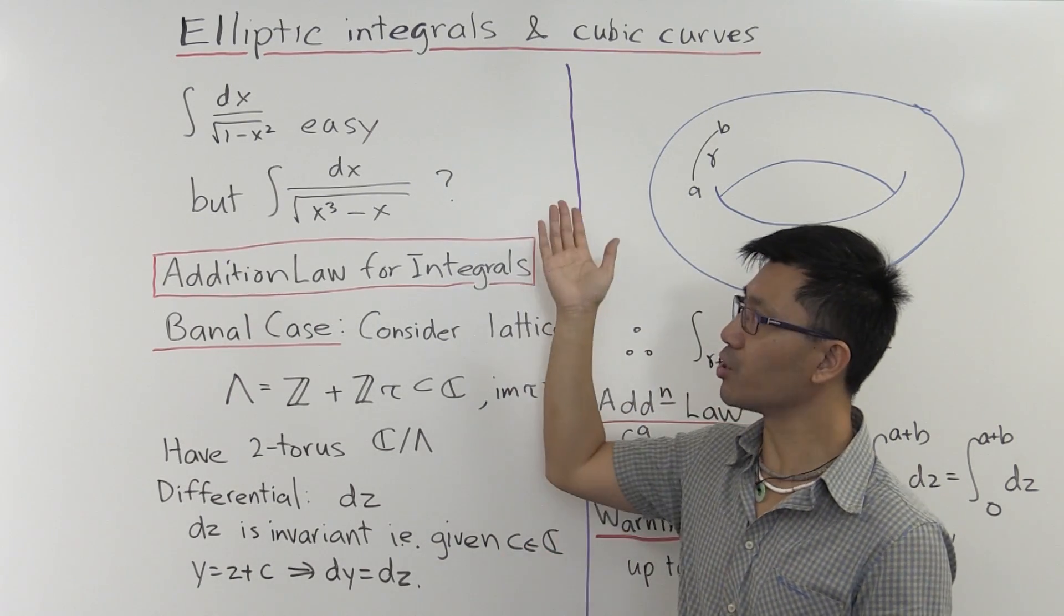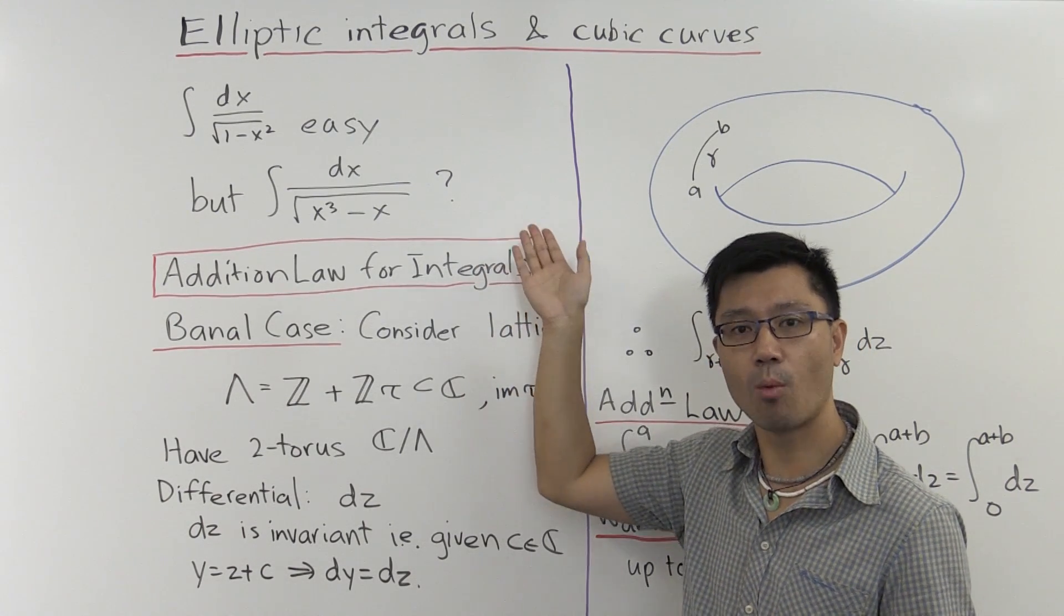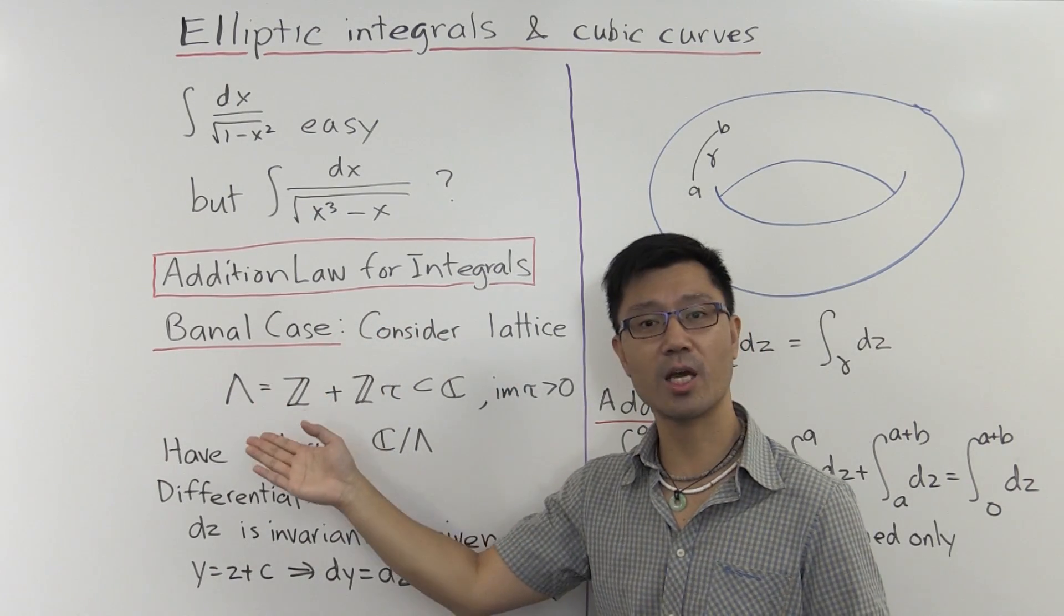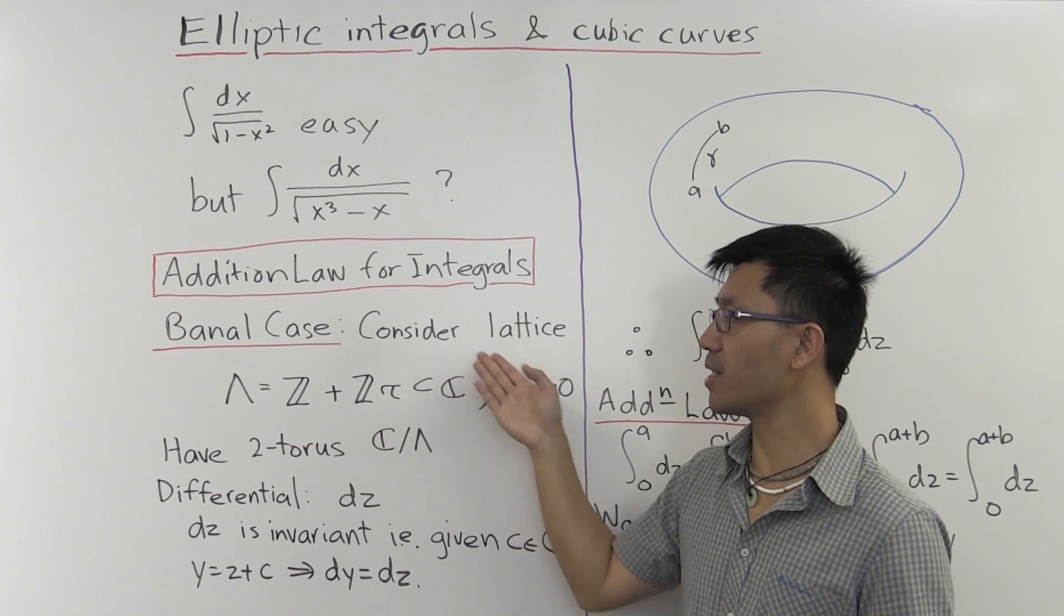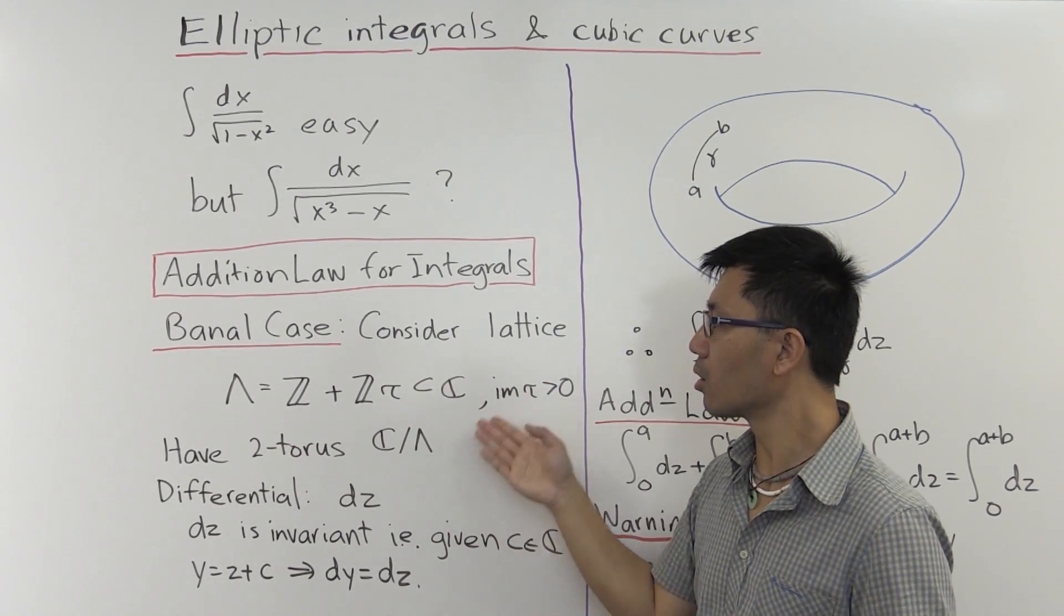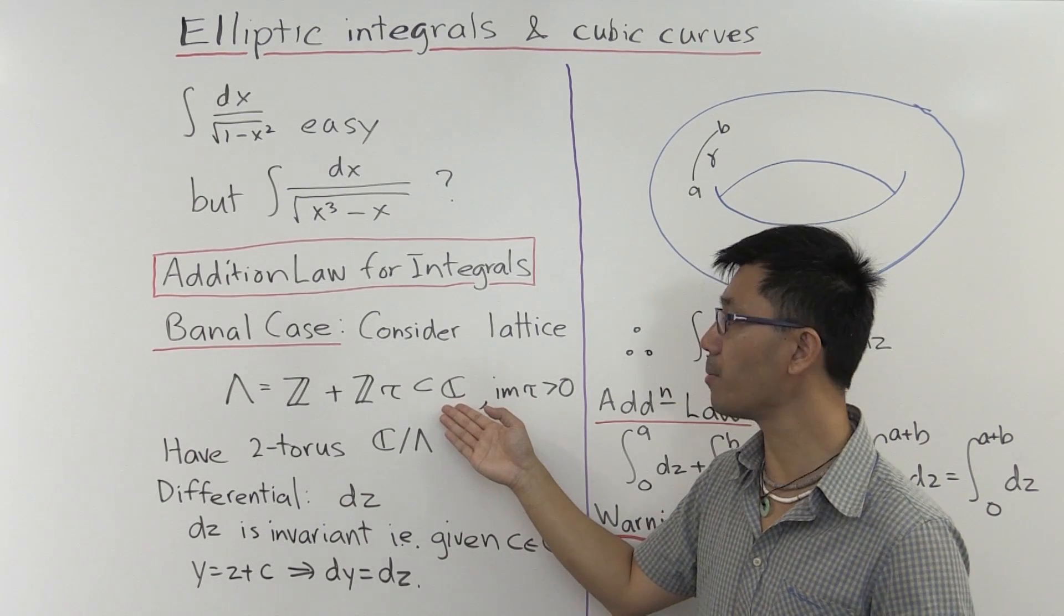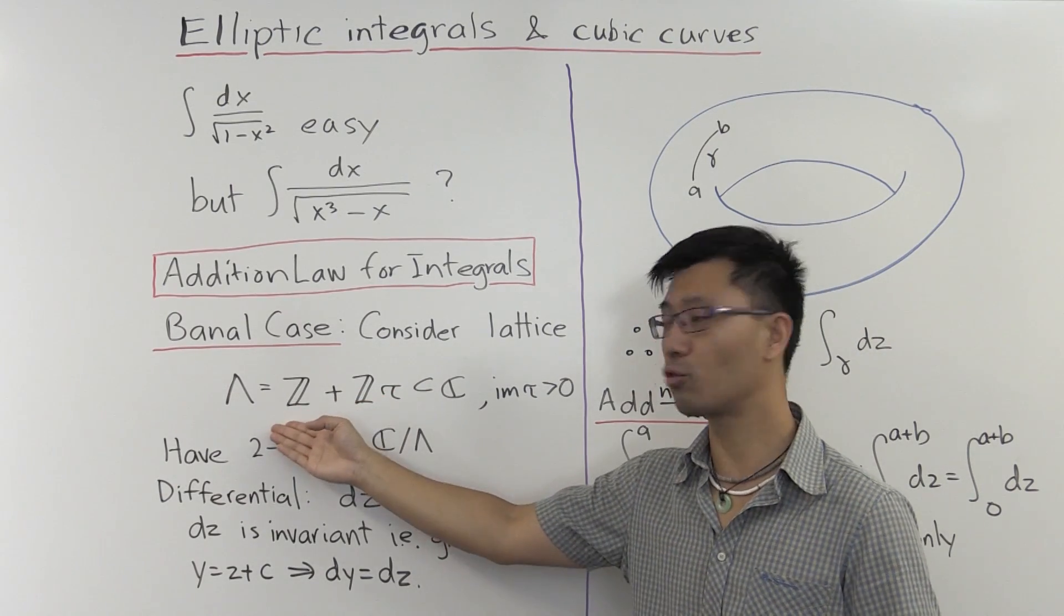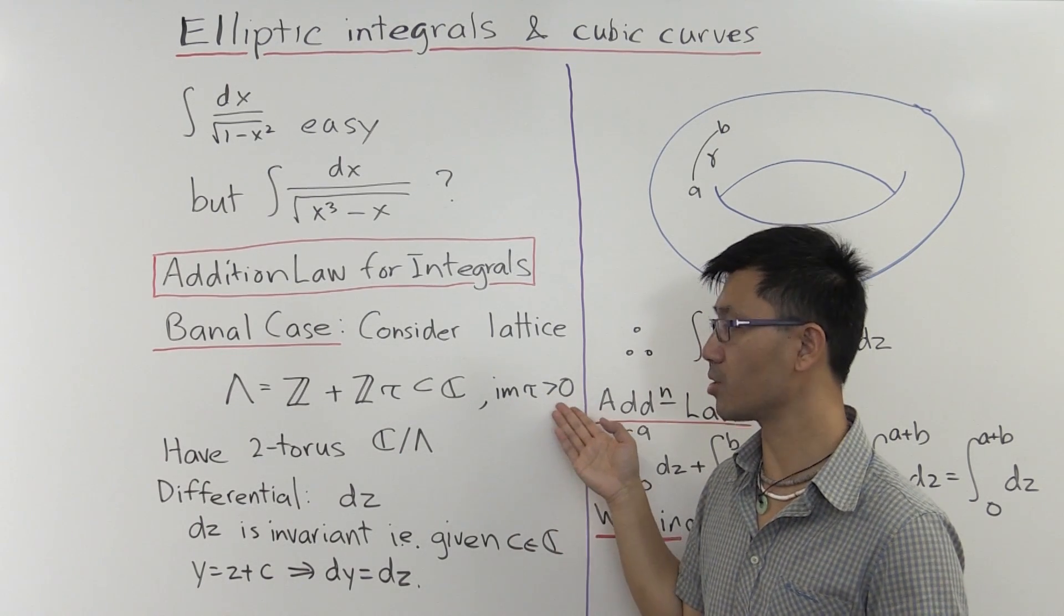So the point of view I want to take is that a cubic curve, remember, is isomorphic to a two-torus. So let's set up the notation for our two-torus as follows. Remember, we can consider the complex manifold, just the complex numbers C. It's a one-dimensional complex manifold. Inside here we have a group Λ = ℤ + ℤτ, where the imaginary part of τ is positive.